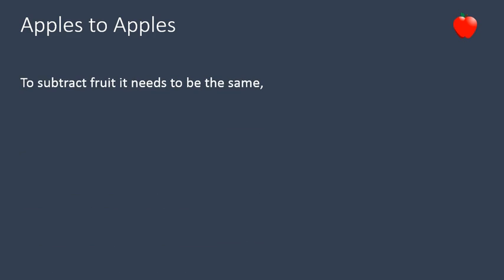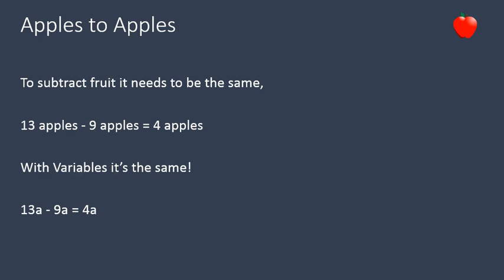If you're going to subtract fruit, it needs to be the same. 13 apples minus 9 apples leaves you 4 apples. Just like with variables, 13 A's minus 9 A's will give you 4 A's. The A's stick together just like apples. So your variable, no matter what it is, has to be like variables for us to be able to subtract them — same as with adding.